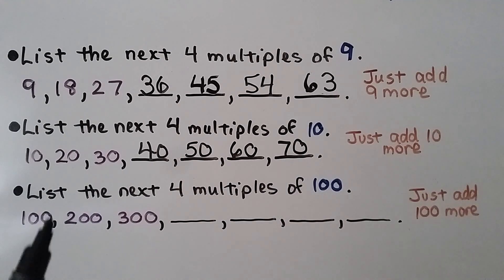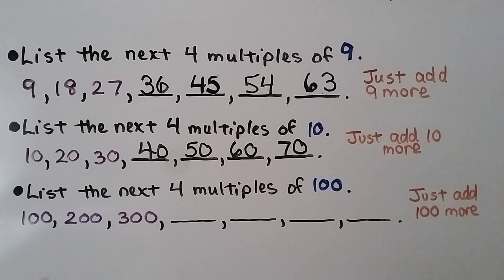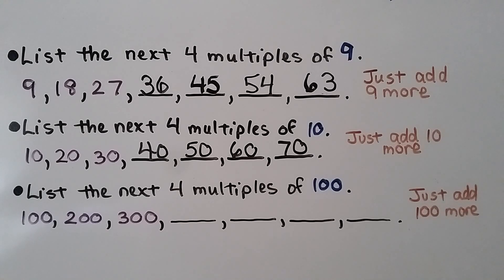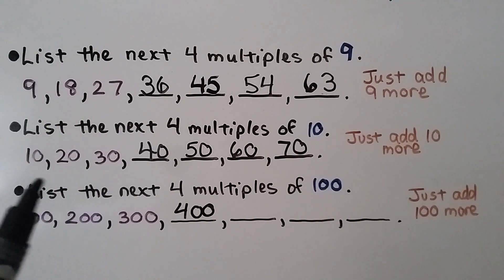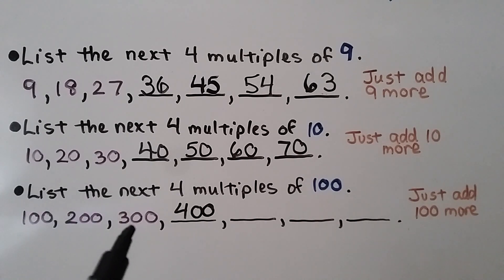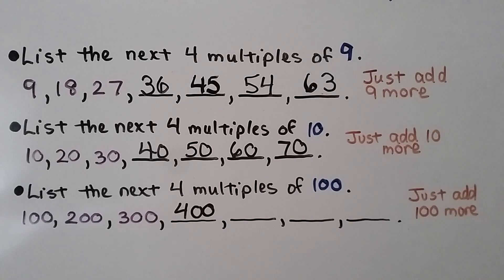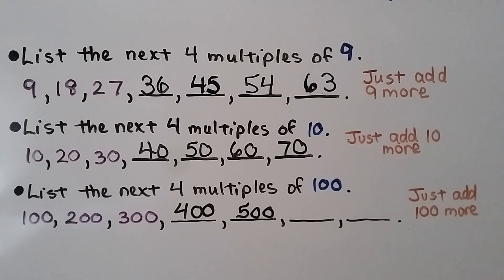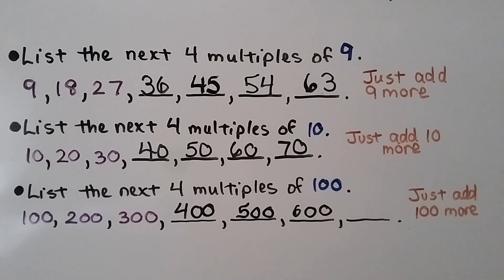Now we need to list the next 4 multiples of 100 — this should be easy also. We have 100, 200, 300, 400. This is 100 times 1, 100 times 2, 100 times 3, 100 times 4, 100 times 5 is 500. Now we have 100 times 6, that's 600. This would be 100 times 7, which is equal to 700.